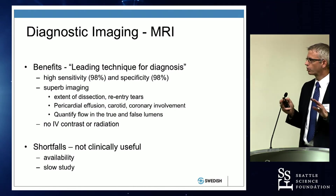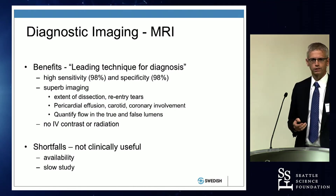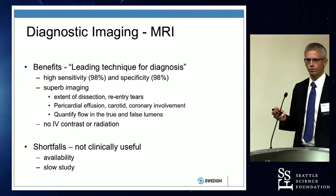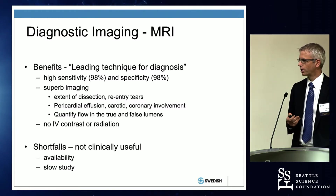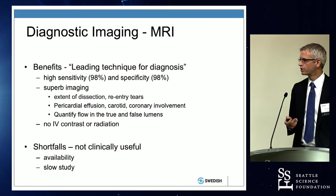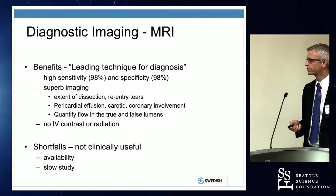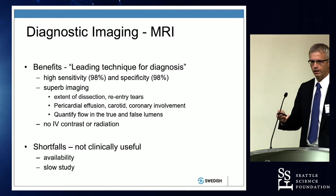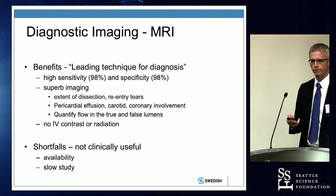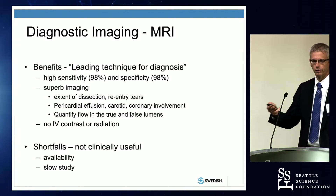MRI is reported to be the leading technique for diagnosis, with almost perfect sensitivity and specificity, giving lots of quantitative and qualitative information. The problem is it takes a long time, and you're not going to send an unstable patient to an MRI for a 45-minute or hour scan. It doesn't have a lot of acute clinical relevance, but in the long term for assessing stability of the aorta over years, it can be helpful.